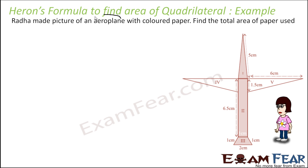So the area of paper used is nothing but the area of part 1 plus part 2 plus part 3 plus part 4 plus part 5. Let's find part 1 — this triangle here.